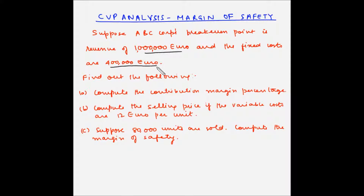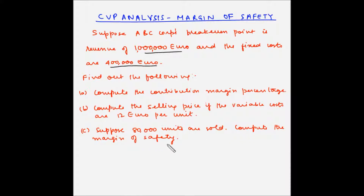With this information we are asked to: first, compute the contribution margin percentage; second, compute the selling price if the variable costs are 12 euro per unit; and third, suppose 80,000 units are sold, compute the margin of safety. Let us take each of these one by one.